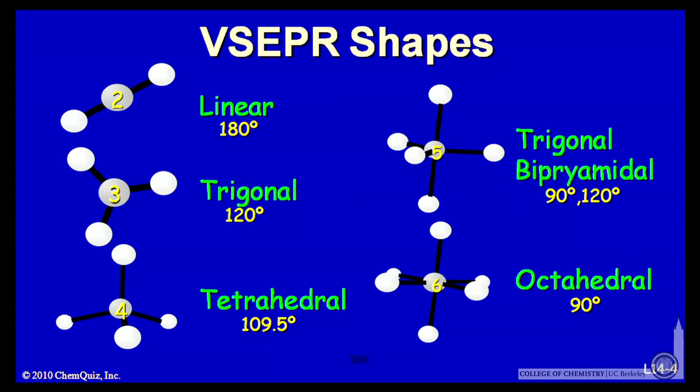we call this a trigonal bipyramid. So it's two triangular pyramids on top of each other. Trigonal bipyramidal is the name we give that shape.